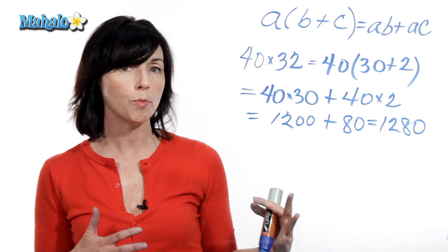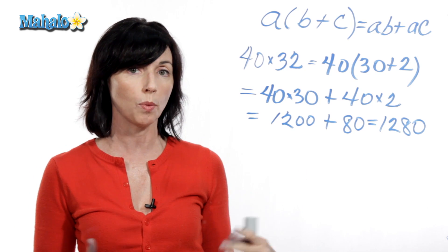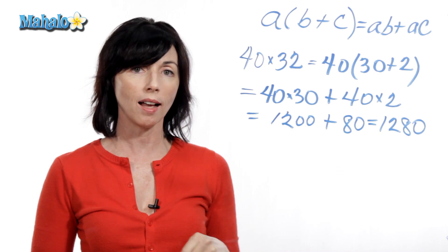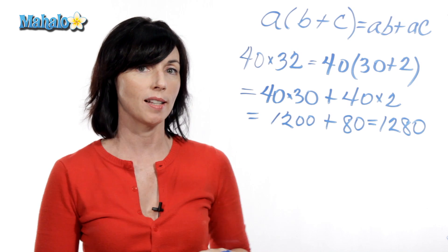So instead of lining them up and doing multiplication the regular way, I can use the distributive property to calculate this. Let me give you one more example.